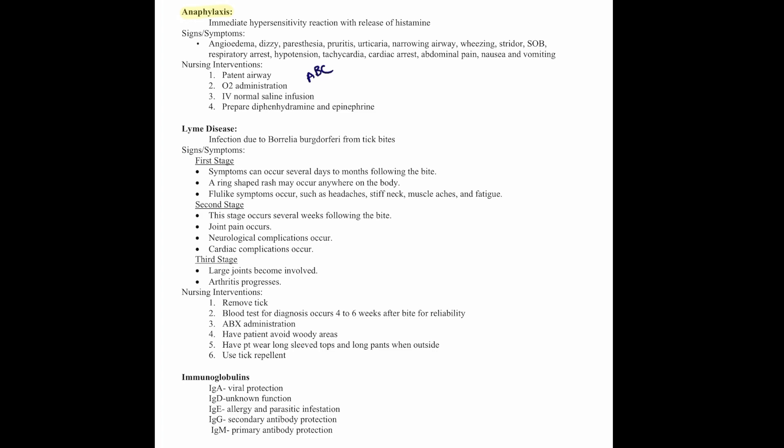Nursing interventions always start with ABCs — first making sure there is a patent airway, since angioedema can close off the airway. We may need to give supplemental oxygen and an IV normal saline infusion. We also want to administer the antidotes, whether that's Benadryl or epinephrine.